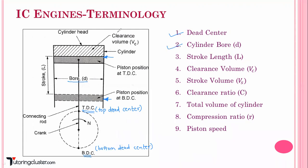The next terminology is stroke length. The travel of the piston from its TDC to BDC is called the stroke of the piston. If r is the radius of the crank, then the stroke length — which is the distance between TDC and BDC — is equal to 2r. So L = 2r, where r is the radius of the crank. This is about stroke length.